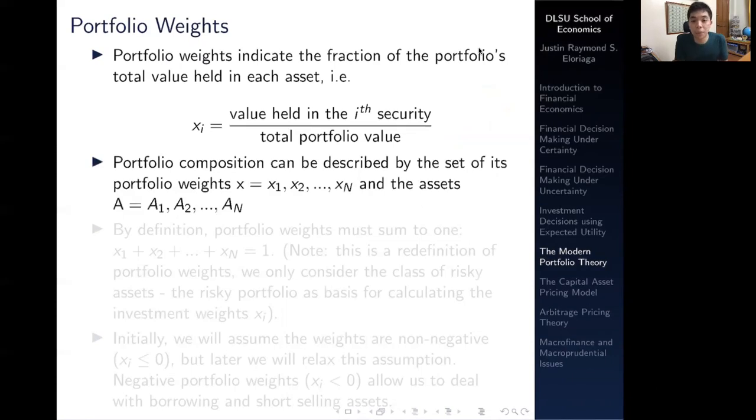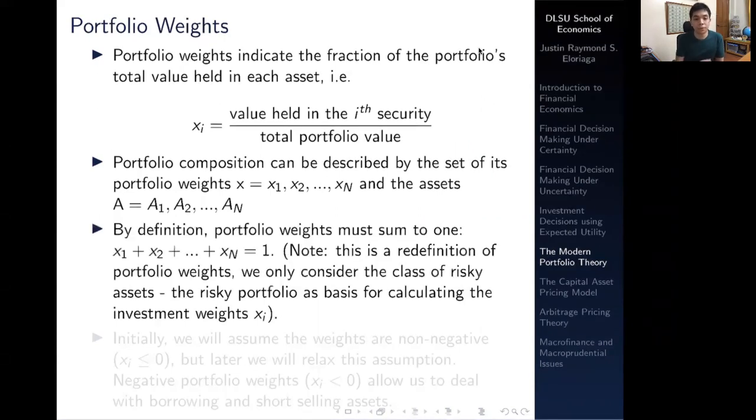The portfolio composition can be described by the set of its portfolio weights. You can think of a portfolio not just as a collection of different securities, but you can characterize them based on the weight that you give each security and each asset inside the portfolio. By definition, portfolio weights must sum up to 1. Note that this is a strict definition of portfolio weights - we only consider the class of risky assets, the risky portfolio, as basis for calculating the investment weights Xi.